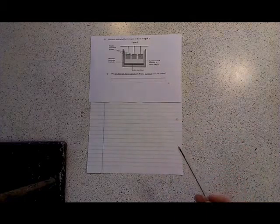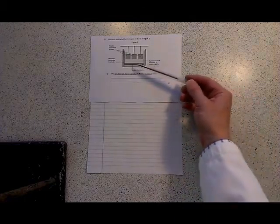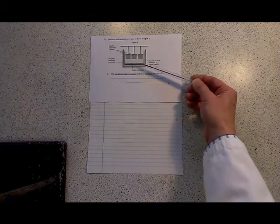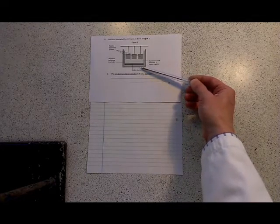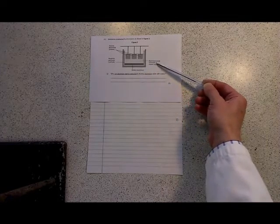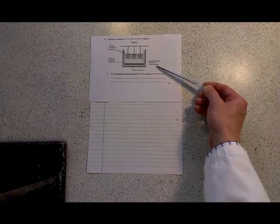The question went on to talk about various other things. For example, the molten aluminium is forming around the negative electrode. Why? Because aluminium ions are positive. It says the aluminium oxide is dissolved in molten cryolite.